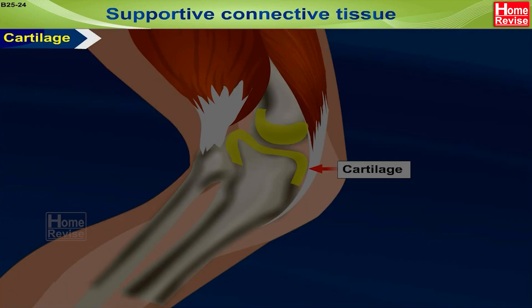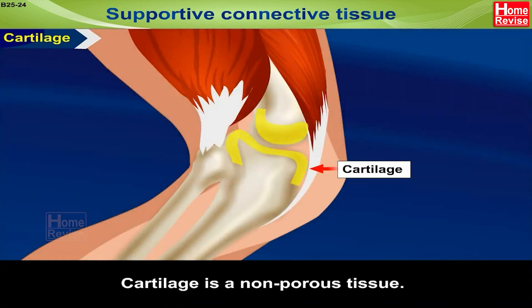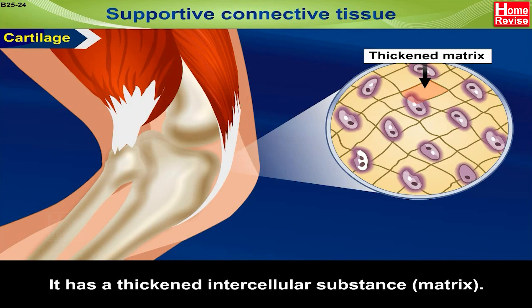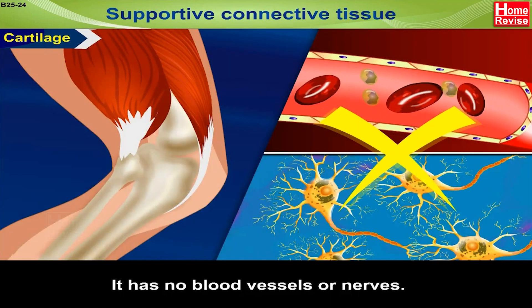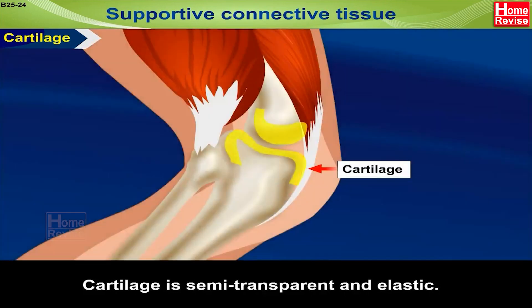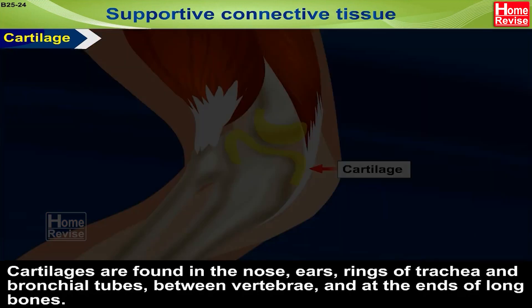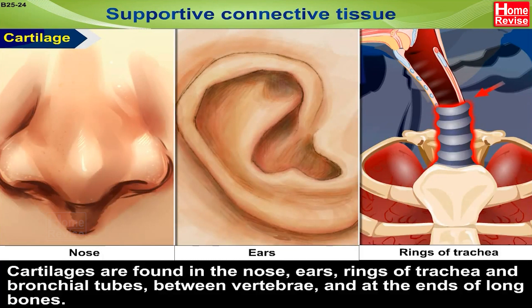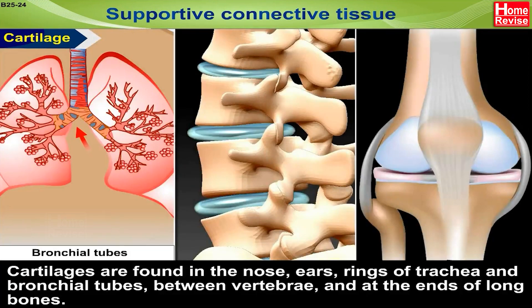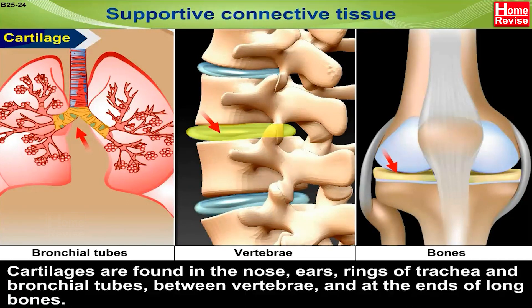Supportive connective tissue — Cartilage: Cartilage is a non-porous tissue. It has a thickened intercellular substance matrix. It has no blood vessels or nerves. Cartilage is semi-transparent and elastic. Cartilages are found in the nose, ears, rings of the trachea and bronchial tubes, between vertebrae and at the ends of long bones.